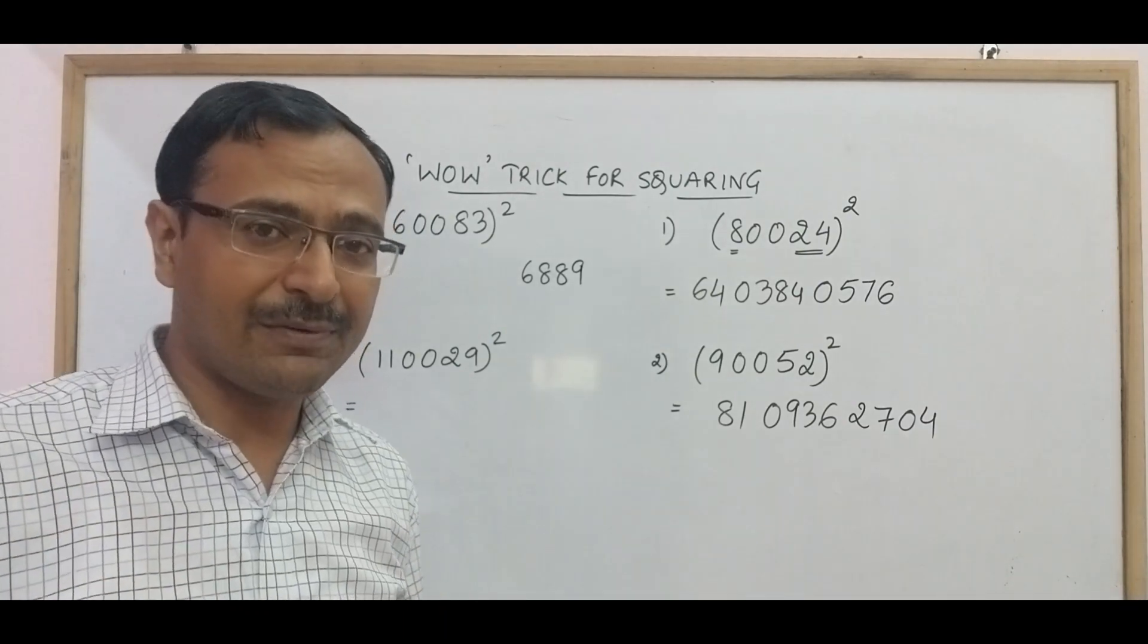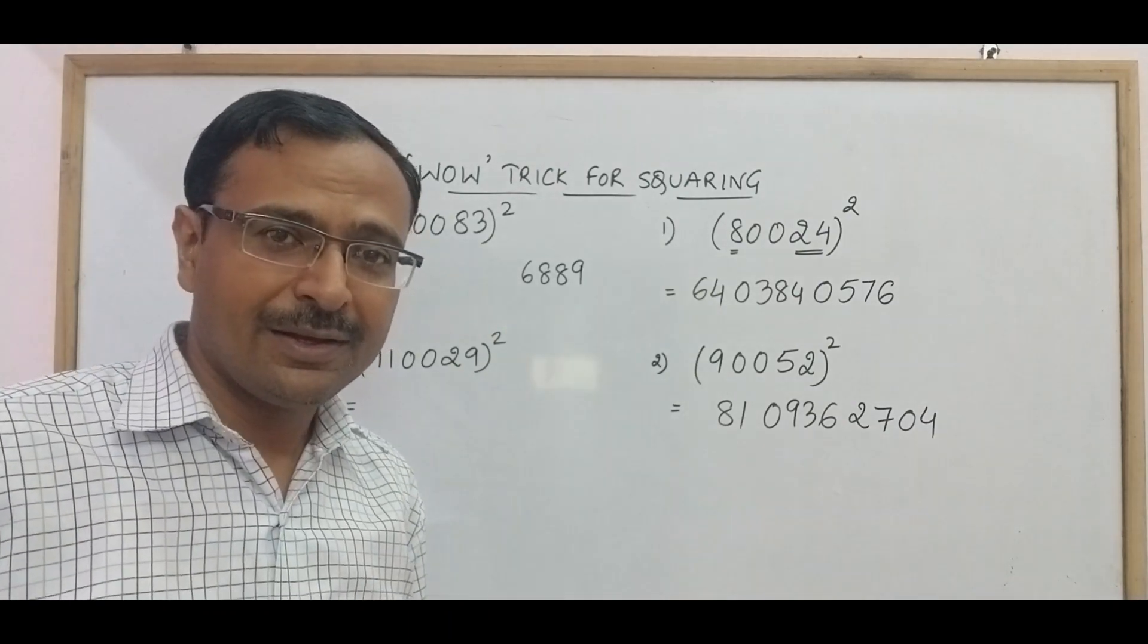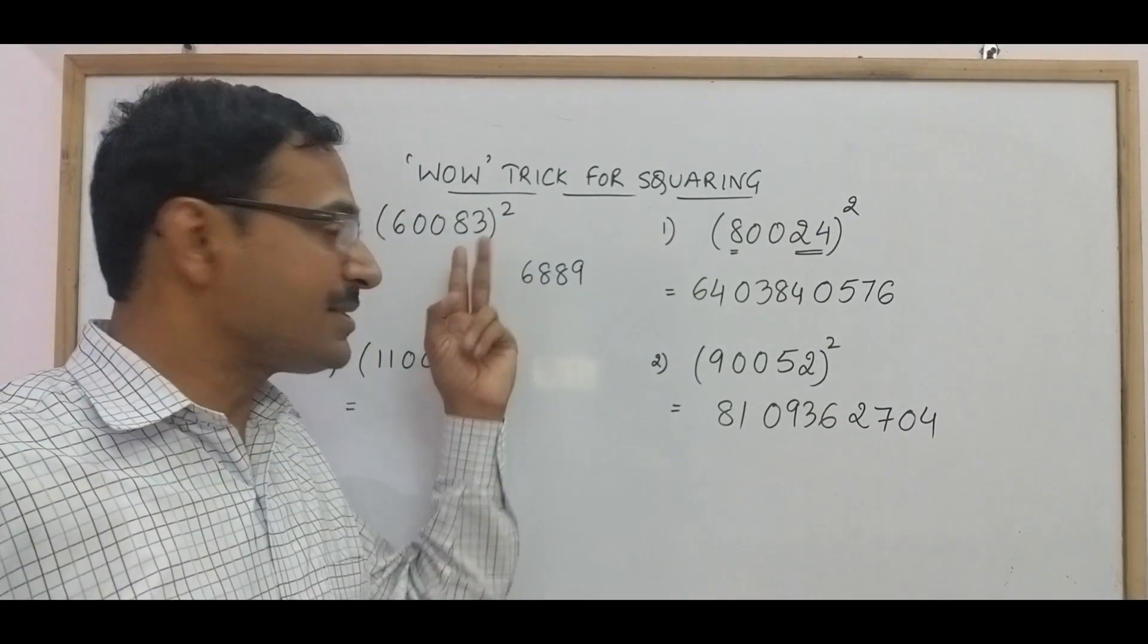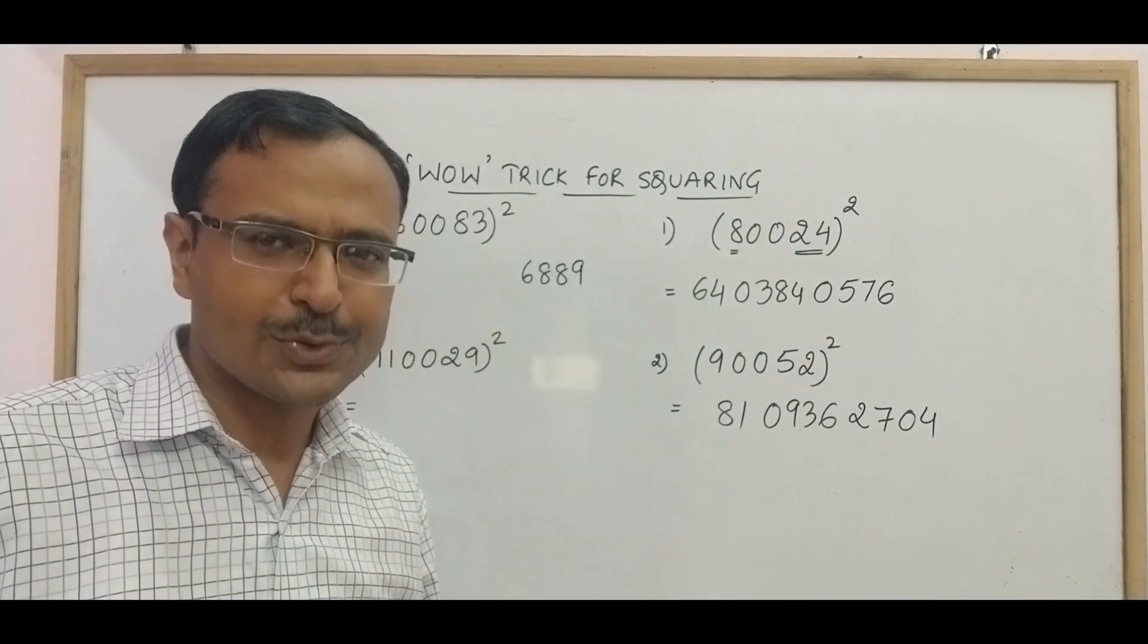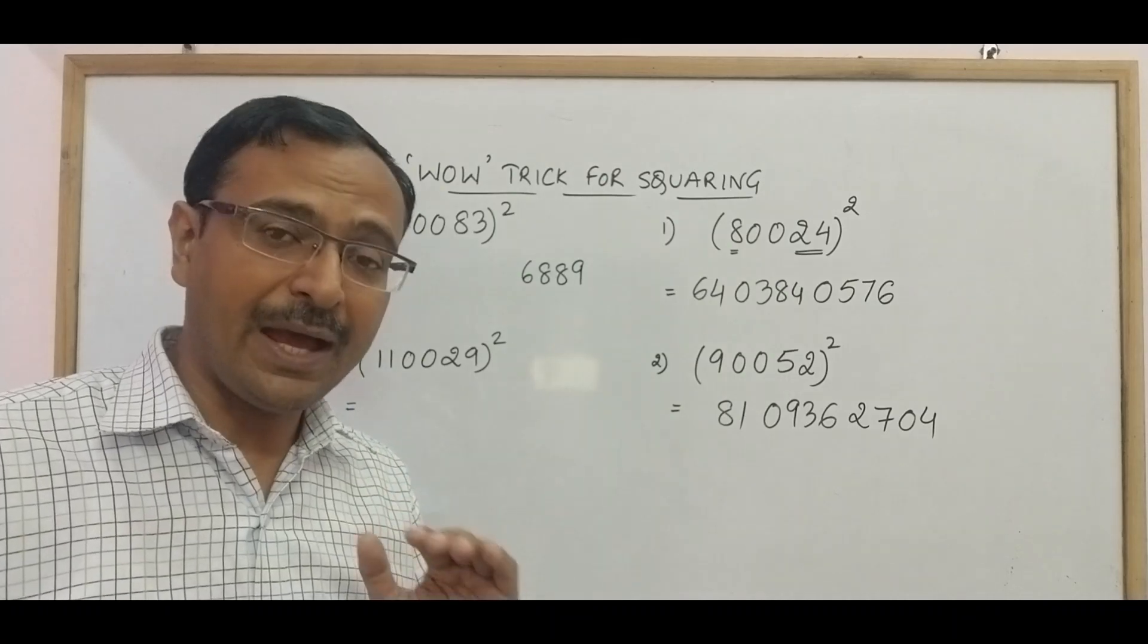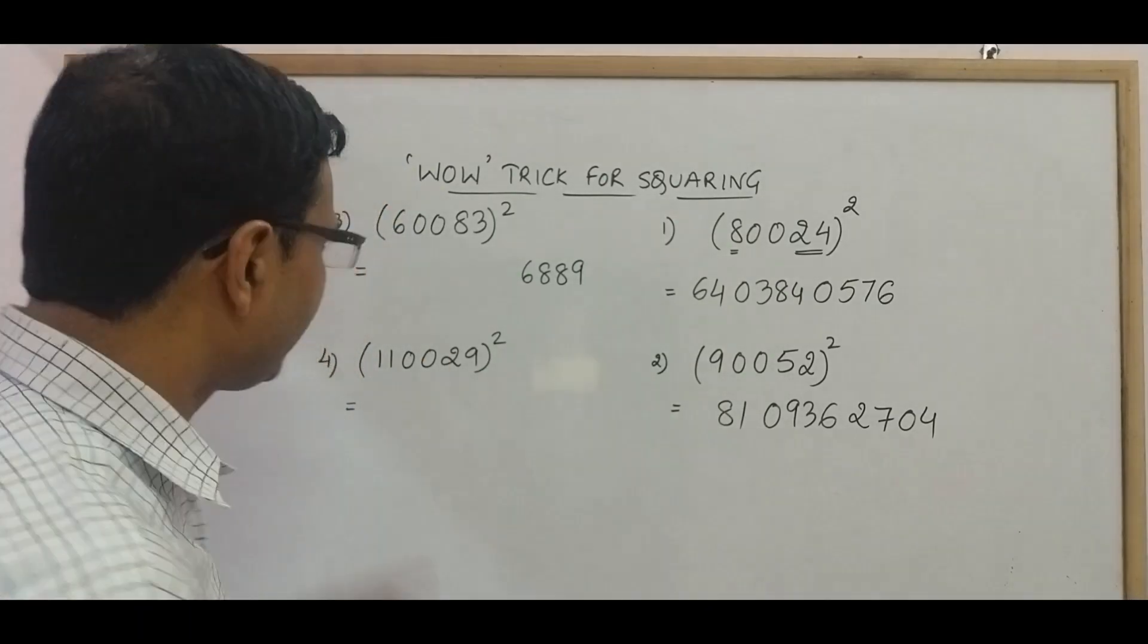If I get a single digit number, I will prefix 3 zeros. If I get a 2 digit number as the square of this, then I will prefix 2 zeros. If I get a 3 digit number, I will prefix 1 zero. So the trick is to have 4 digits. Now the second step: